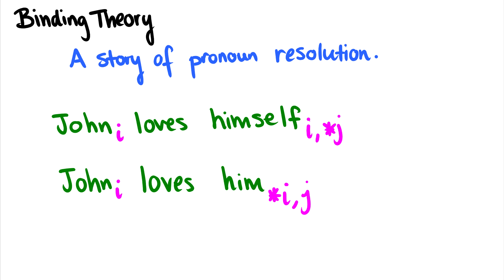What is binding theory? The overall notion of binding theory is a story of pronoun resolution, which means these words like 'himself' and 'him' — where do they get their reference? What do they refer to?